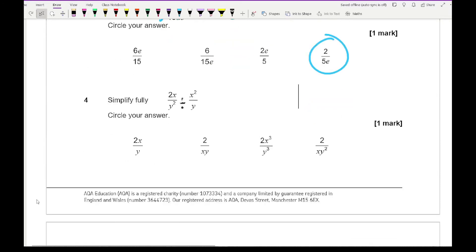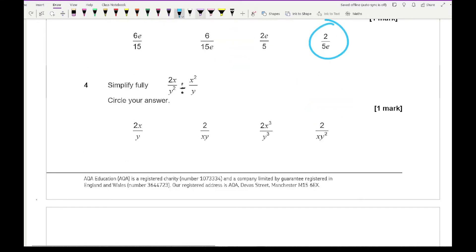With question four we just use the same principles when we divide fractions. We flip the second fraction and turn it into a multiplier. If I join those two things together I get 2XY over X squared Y squared and then I can simplify. I can take an X from there and an X from there and a Y from there and a Y from there, leaving me with a final answer of 2 over XY which is our second option.